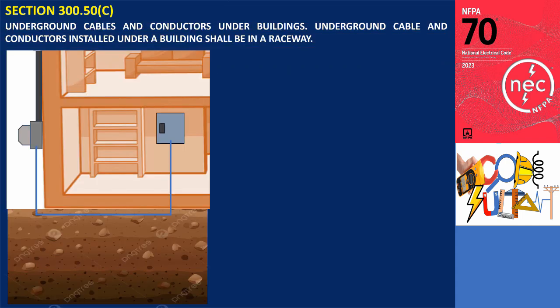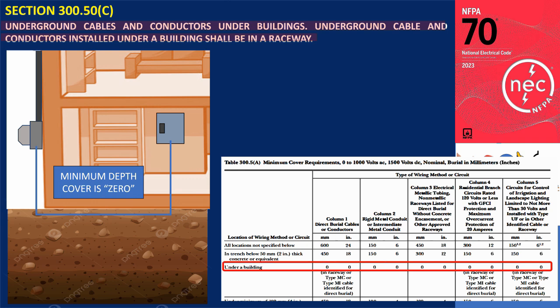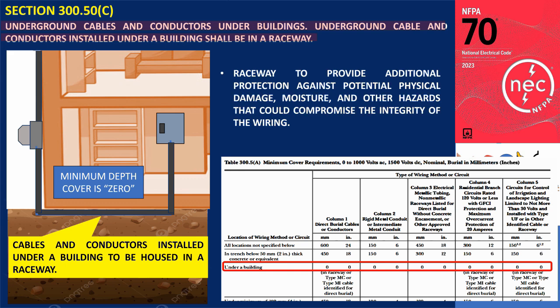Section 300.5(C): Underground cable and conductors installed under a building shall be in a raceway. Since Table 300.5(A) cover under the building is zero, the code requires all underground cables and conductors installed under a building to be housed in a raceway. This requirement is in place to provide additional protection against potential physical damage, moisture, and other hazards that could compromise the integrity of the wiring.